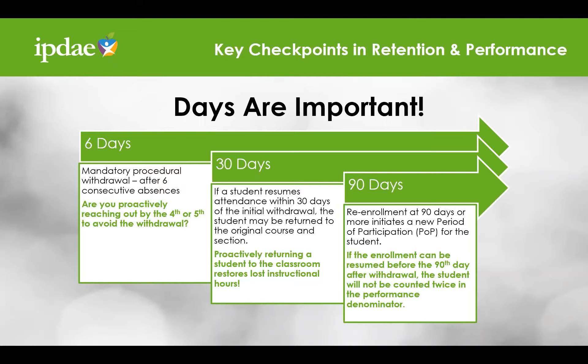Let's move on to 30 days. If a student is withdrawn and returns to class within 30 days, the student is re-entered in the original course and section number. If the student returns after an absence of more than 30 days, the student is required to be re-enrolled in a different section. The urgency here is to return the student to the classroom as early as possible to restore lost instructional hours.